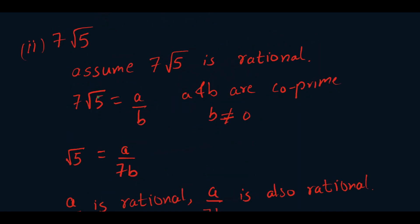Our second question is to prove that 7 root 5 is an irrational number. We start by assuming that 7 root 5 is a rational number. Hence, 7 root 5 equals a by b, where a and b are co-prime and b is not equal to 0.